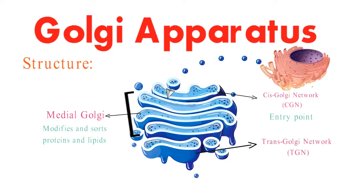The third part is the Trans-Golgi network, or TGN. This is the exit point — it packages the modified molecules into vesicles for transportation to their final destinations.